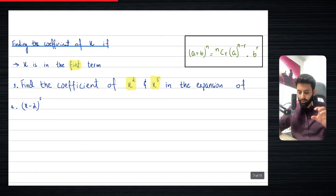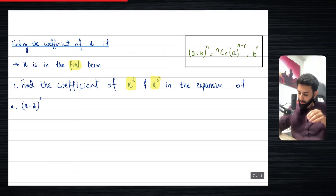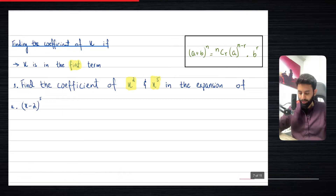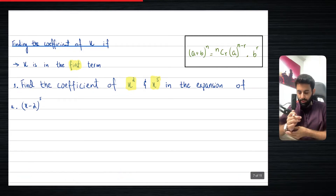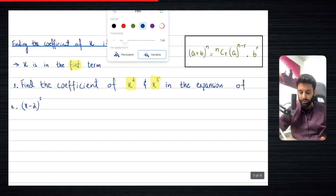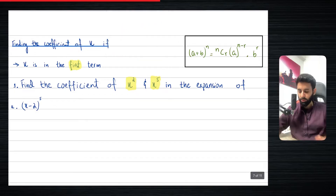Now, assuming you only know what I've taught so far regarding binomial, you may be thinking: how about I expand this, and then look for the coefficient of x squared and the coefficient of x to the power 5, and write the answer. That's absolutely fine — you will get the right answer — but that's not exactly a very efficient way of doing this. There is a more efficient way, but first we're going to do it the longer way.